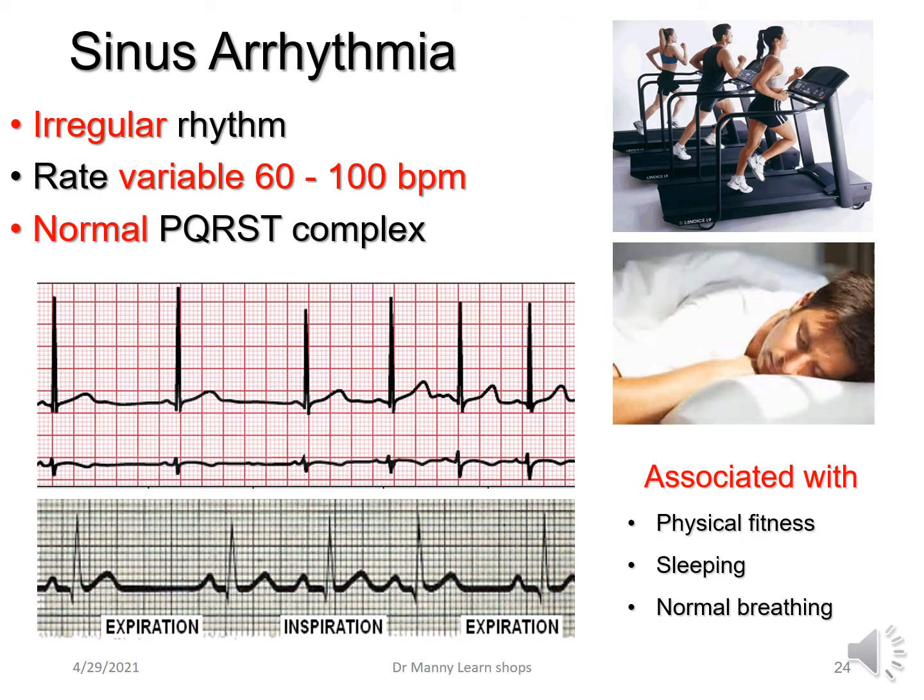Sinus arrhythmia — 'a' means without — so sinus without rhythm. This is an irregular rhythm, and the rate can be variable between 60 and 100 beats per minute, with a normal PQRST complex. Typically it's not pathological in adults, and it can be related to physical fitness, sleeping, or vagal stimulation from normal breathing.